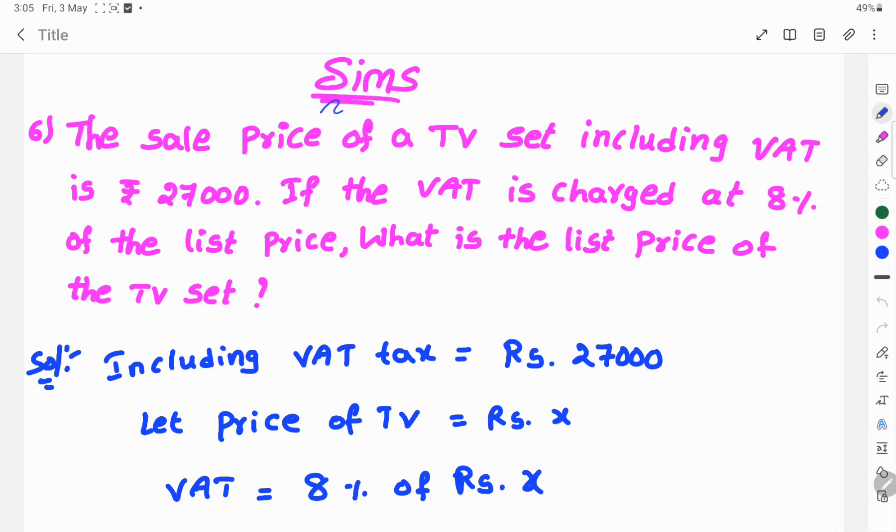Hi, welcome to Sims. Today's sum: The sale price of a TV set including VAT is 27,000 rupees. If the VAT is charged at 8% of the list price, what is the list price of the TV set?